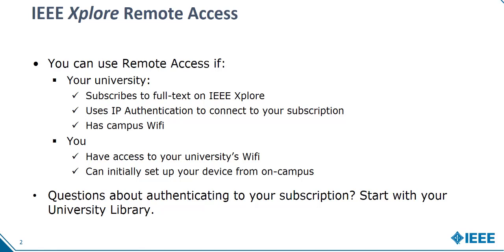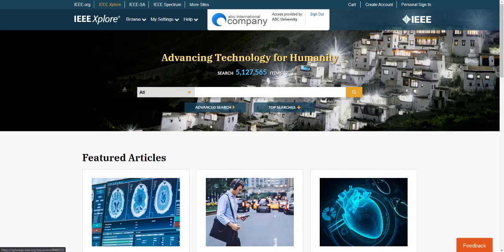To start, bring your smartphone, tablet, or laptop on campus and access your university Wi-Fi. Open a browser window and go to IEEE Xplore. You should see your university name and logo at the top of the homepage so you know you are accessing your library's subscription.